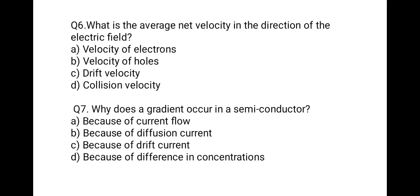Question 6: What is the average net velocity in the direction of the electric field? Options: velocity of electrons; velocity of holes; drift velocity; collision velocity. The correct answer is drift velocity. When we apply an electric field, electrons flow — this is drift current due to the applied electric field. The more the electric field, the more the velocity. So the average net velocity of electrons when we apply an electric field is called drift velocity.